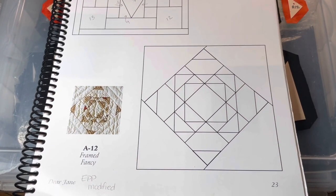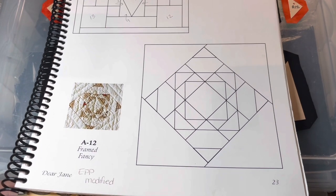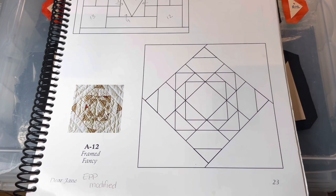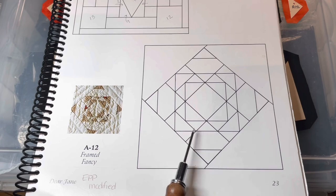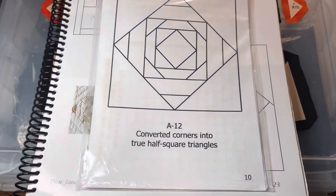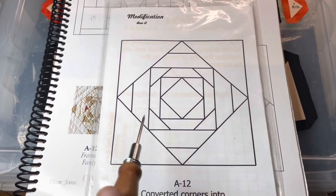Now we're up to A12, and A12 is a modified block. The modification is in the booklet of this kit. Basically what they've done is simplified—there's less pieces, but it's the same exact look. So we're going to work from the booklet here, and what we have is a square and a square and a square.